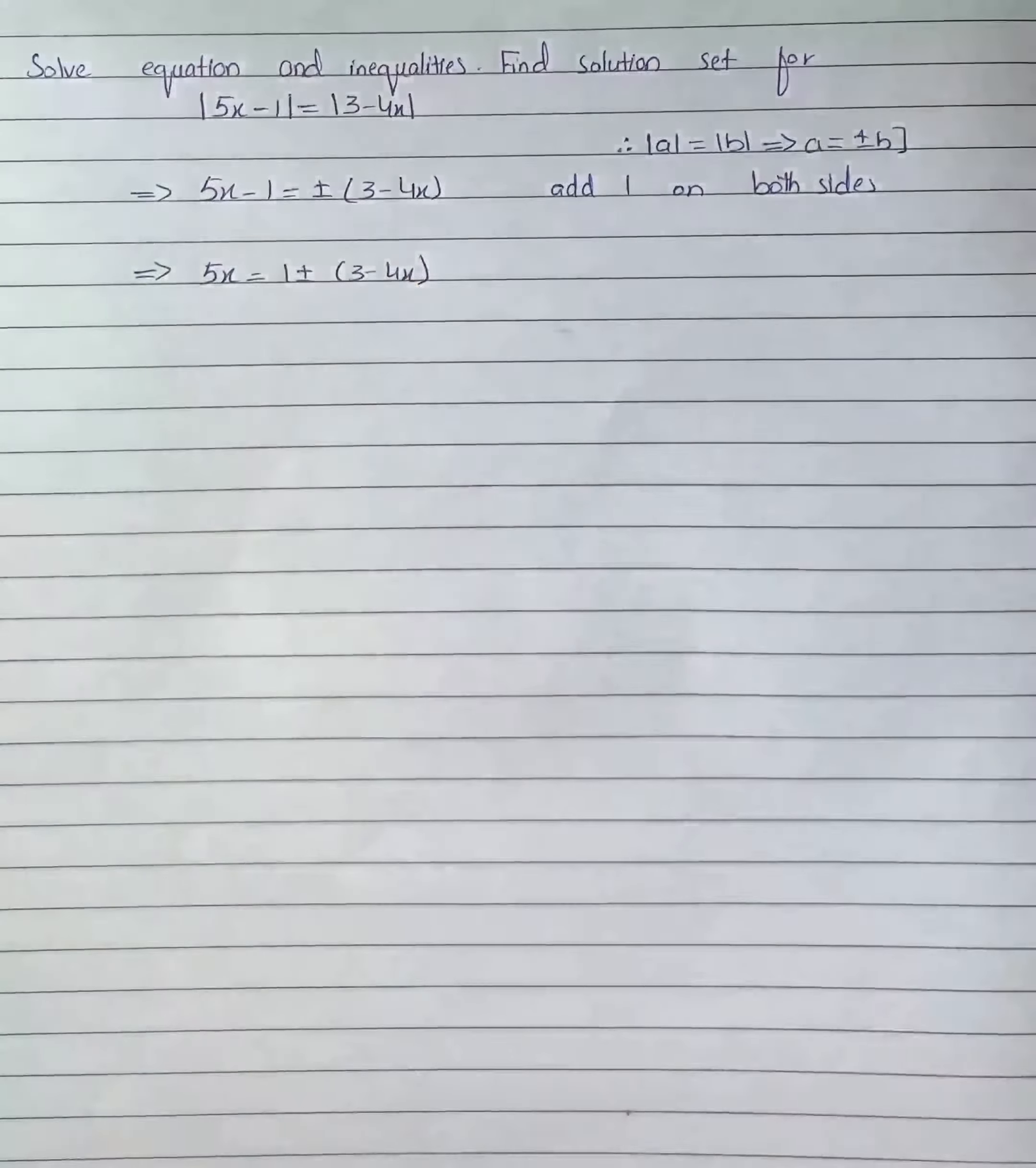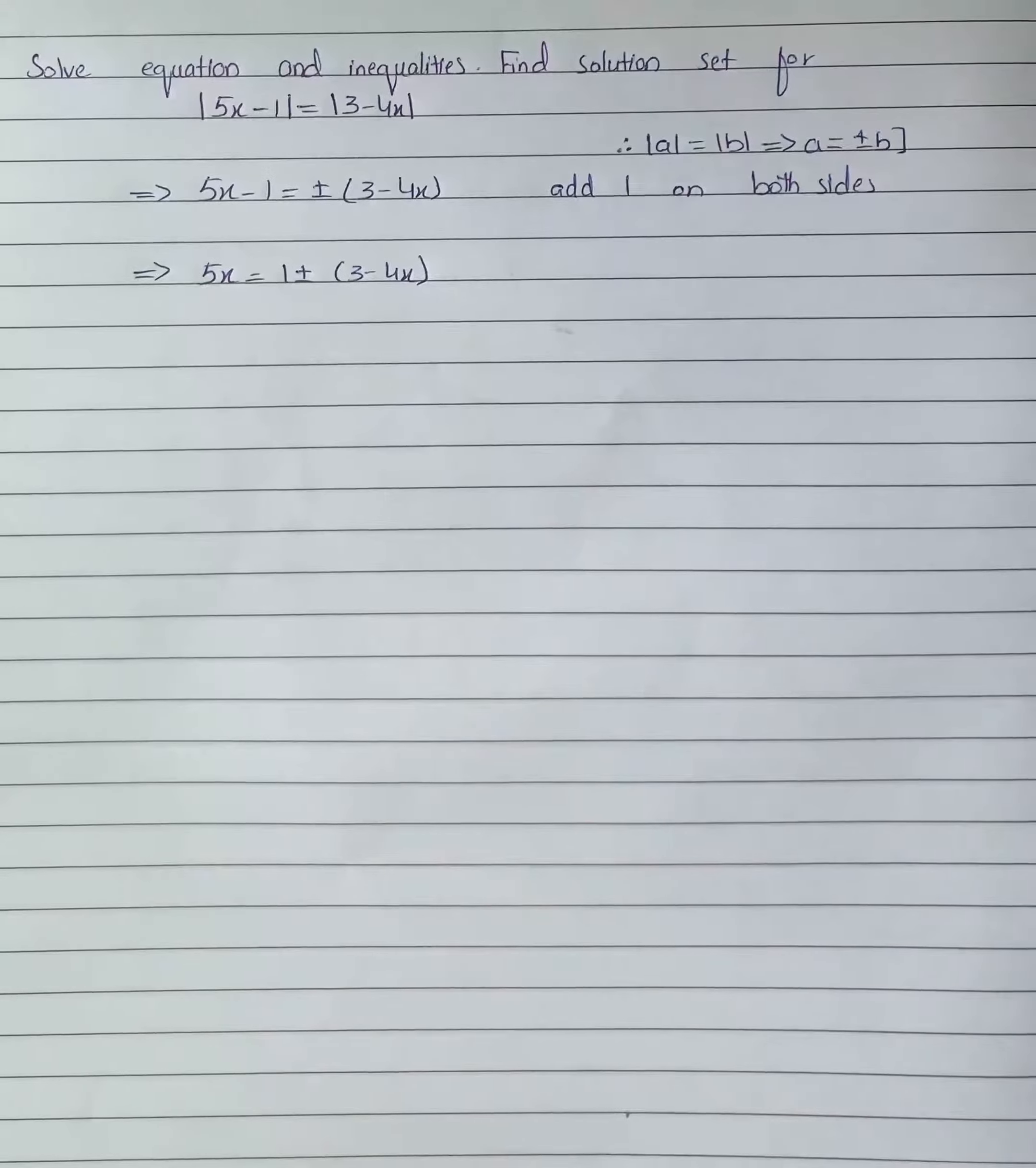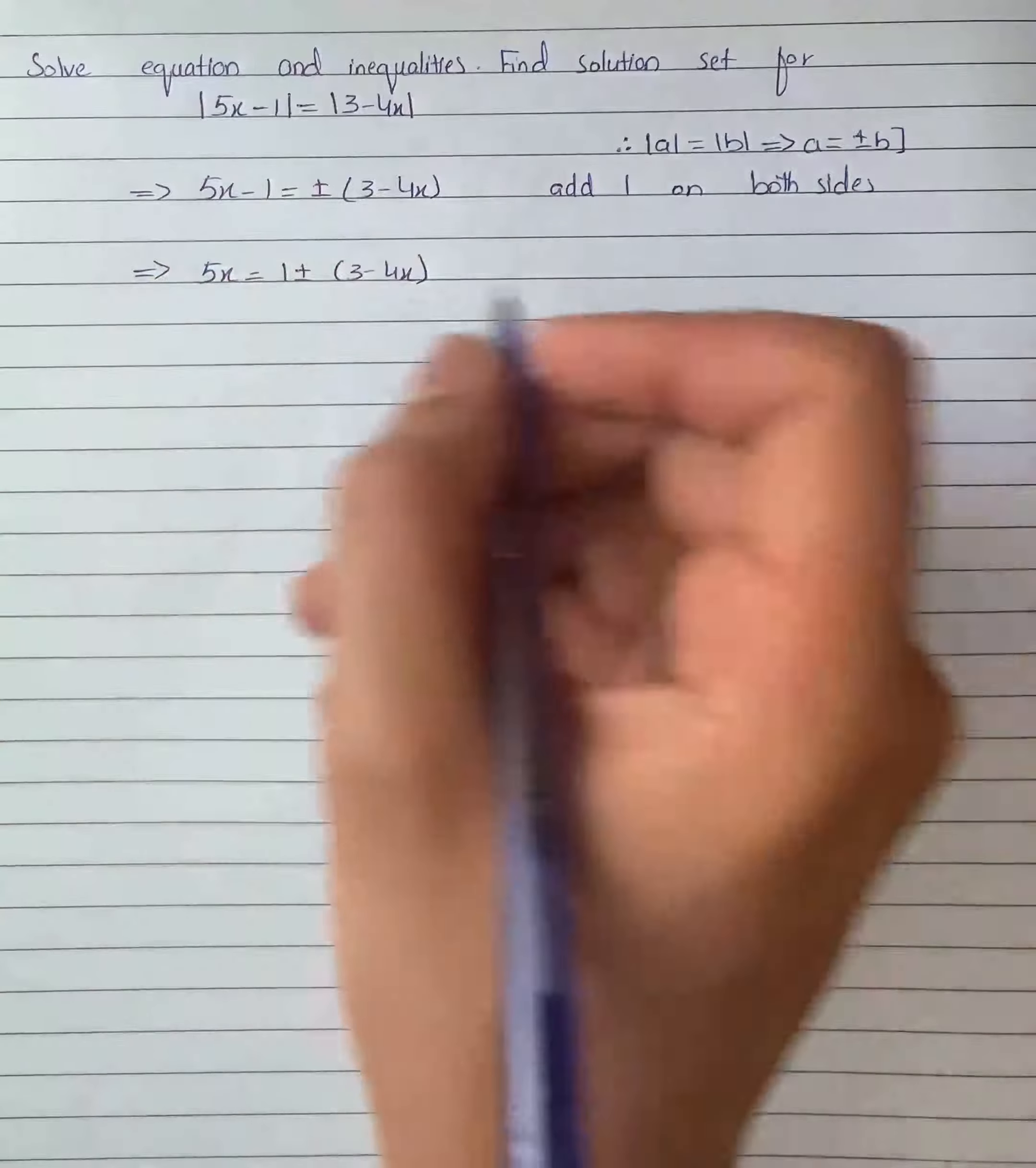Now here we have two possibilities. The first possibility is 5x = 1 - (3 - 4x) and the second possibility is 5x = 1 + (3 - 4x). So we will solve both possibilities.